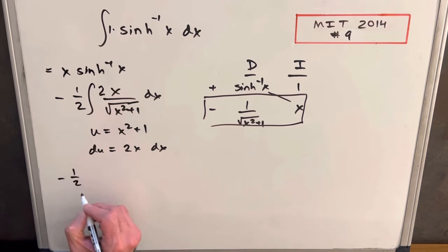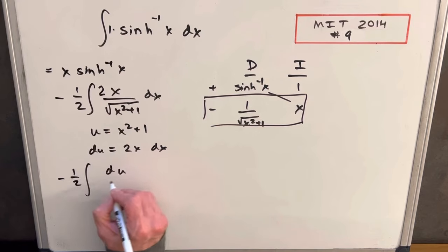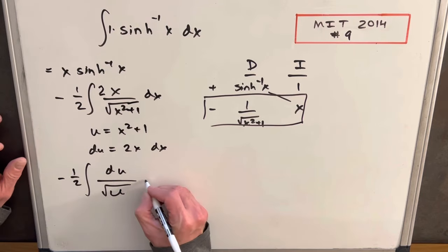We're going to have minus one half. Numerator is going to be du over square root of just u. And I'm just going to rewrite this.